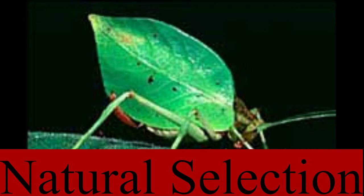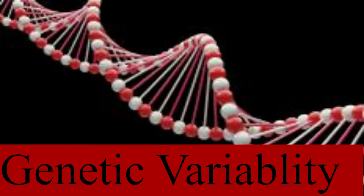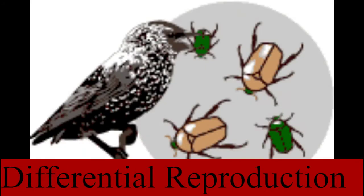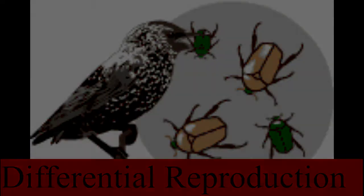As mentioned earlier, natural selection is the key mechanism of evolution. There are three things that must occur for natural selection to take place: one, genetic variability in a trait within the population; two, the trait must be heritable or able to be passed to other generations; and three, differential reproduction must enable individuals with the trait to leave more offspring than those without it.